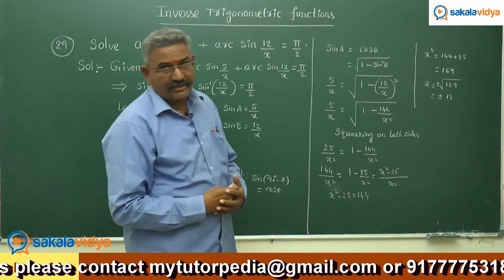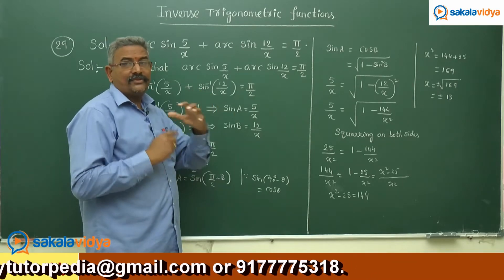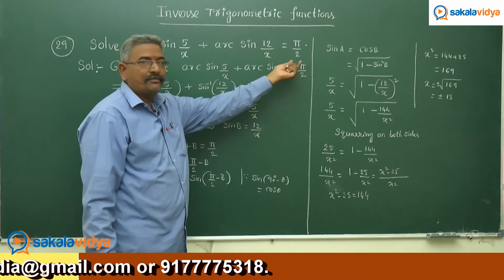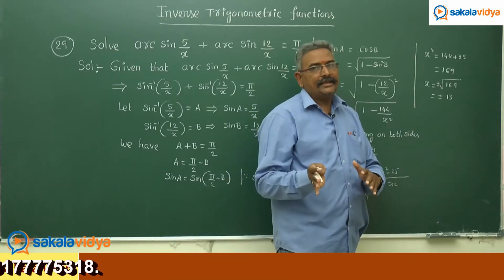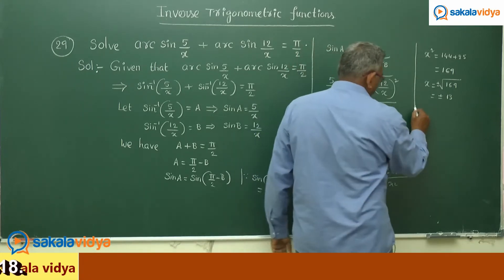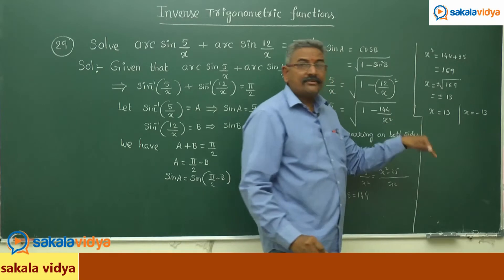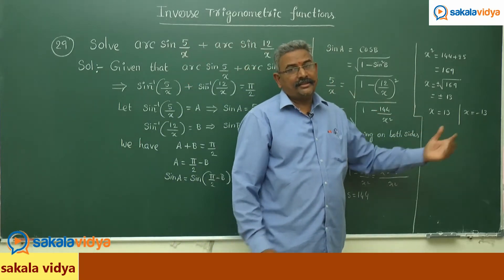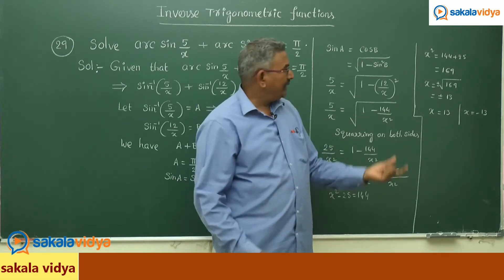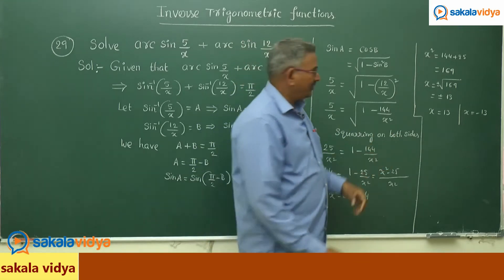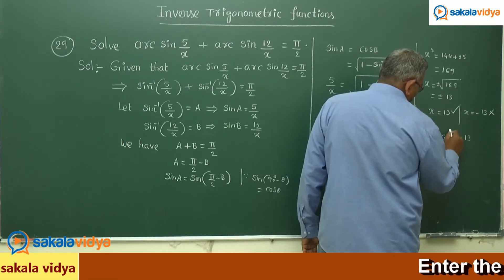Whenever these kinds of equations are solved, it is necessary to check whether the given values satisfy the given equation. Observing sine inverse(5/x) plus sine inverse(12/x) equals π/2 — the sum must be positive. Though we get x = −13 as a solution, the negative value has to be discarded as an extraneous solution. So x = 13 satisfies the equation and x = −13 does not. Hence, x equals 13.